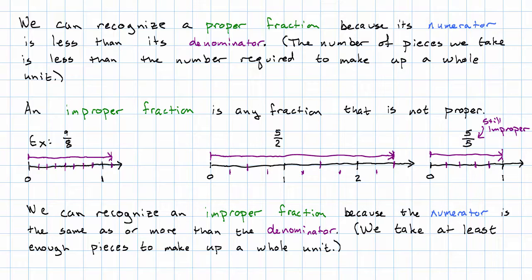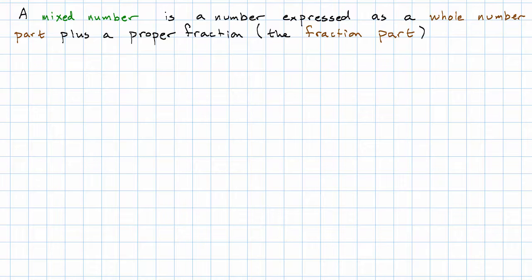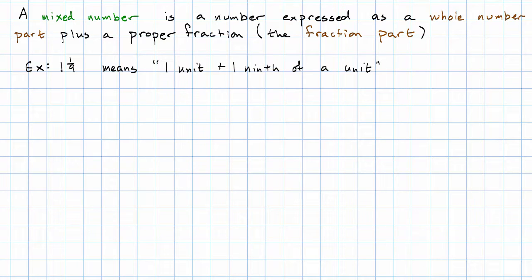We just mean that this is a fraction that represents a quantity that's at least one whole unit. When we say that it's proper, we don't mean that it's right, and we don't mean that it's in lowest terms — we just mean that it represents less than a whole unit. One more idea we need to introduce in talking about quantities that are more than a whole unit: we need to talk about the idea of a mixed number. A mixed number is a number expressed as a whole number part plus a fraction part. The fraction part must be a proper fraction.